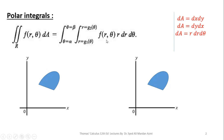f(r, θ) is a function of r and θ. Since r is our inner variable, the limits of r may be constant or variable — that is why I have written r = g₁(θ) and r = g₂(θ). θ is our outer variable, so the limits of θ are always in the form of constant real numbers.